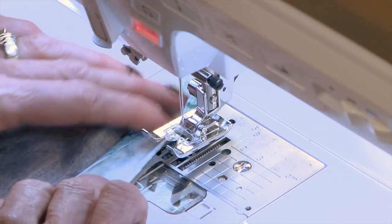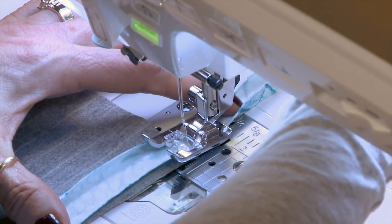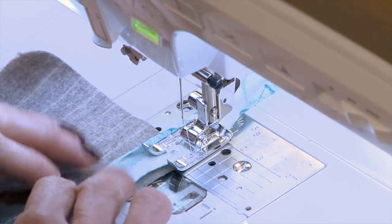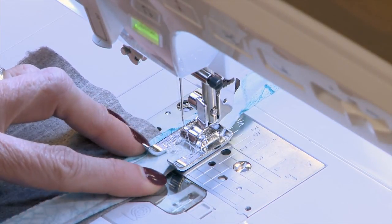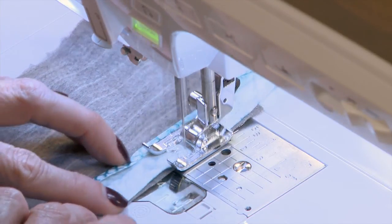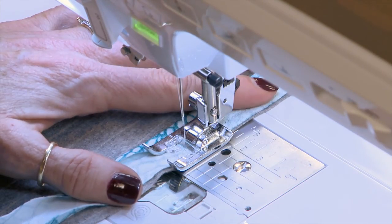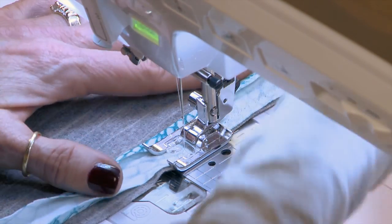Line up the two edges, the edge of our fabric and the edge of the bias tape that we've made. And then we're going to stitch right in that ditch. And I'll just sew a little bit just to show you.